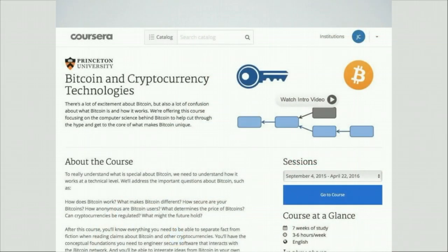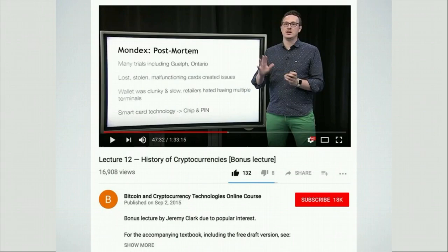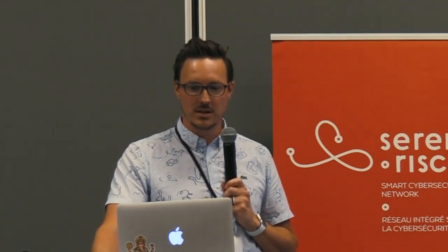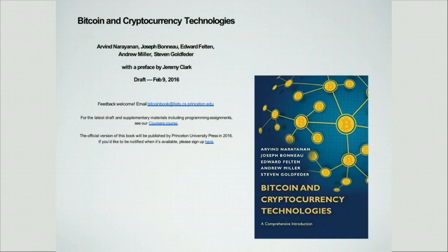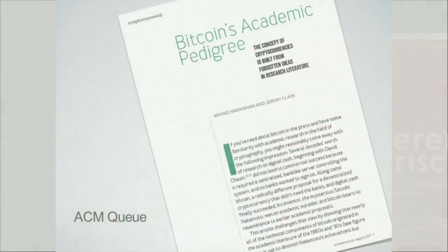Since we can't cover all of blockchain and Bitcoin in half an hour, if you're interested in learning more I recommend a free course on Coursera or YouTube from Princeton — I give one of the lectures — which covers mostly Bitcoin and some blockchain applications. There's also a free PDF textbook, and a print version available on Amazon. If you're interested in the history of Bitcoin and where the ideas came from, I recommend our article. That's enough self-promotion — I'll take questions. We have about 15 minutes.